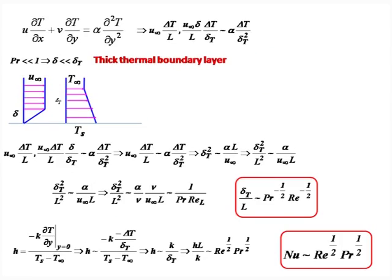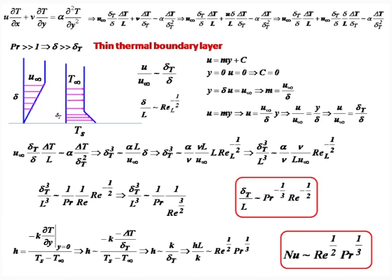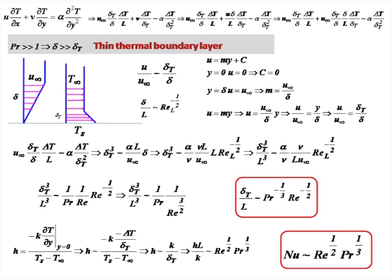We are skipping the Prandtl number greater than 1 case — I would like all of you to work on this and derive that delta_T by L is of the order of Pr to the power minus 1/3 times Re to the power minus half for thin thermal boundary layer, that is Pr greater than 1, and Nusselt number is Re to the power half and Pr to the power 1/3. I am handing over to Professor Arun who will teach the closed-form solution of flow over a flat plate.